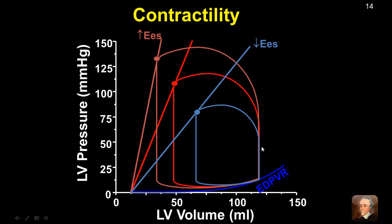The loops are contained within the boundaries of the ESPVR and EDPVR, and when the ESPVR changes, those loops will change in response to the change in contractility. From the baseline in red, with an increase in contractility the loops get wider and taller — increasing stroke volume and pressure generation — whereas when contractility is depressed with a reduction in EES, the loops get more narrow and shorter, meaning a reduction in stroke volume and pressure generation, despite having a constant preload volume.